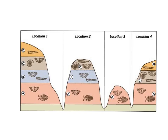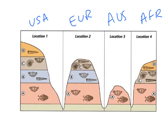Let's look at an example of using index fossils to relatively date rock layers. In this diagram, we have four rock columns from four different locations labeled on top — they wouldn't necessarily be next to each other. Location one might be in America, location two in Europe, location three in Australia, and location four in Africa. At location one, layer A would be the oldest because it's on the bottom, then B, then C and D.